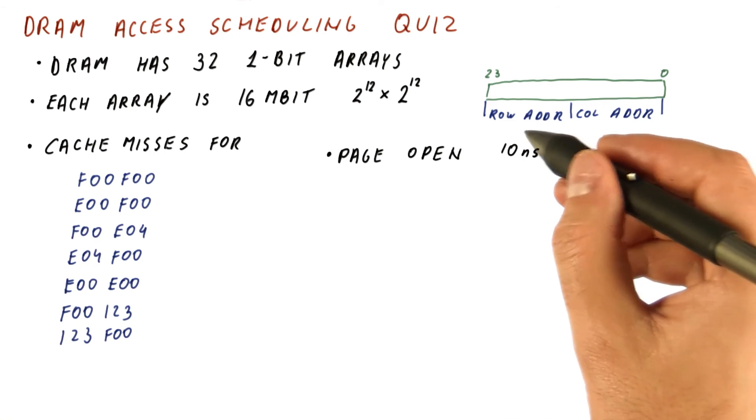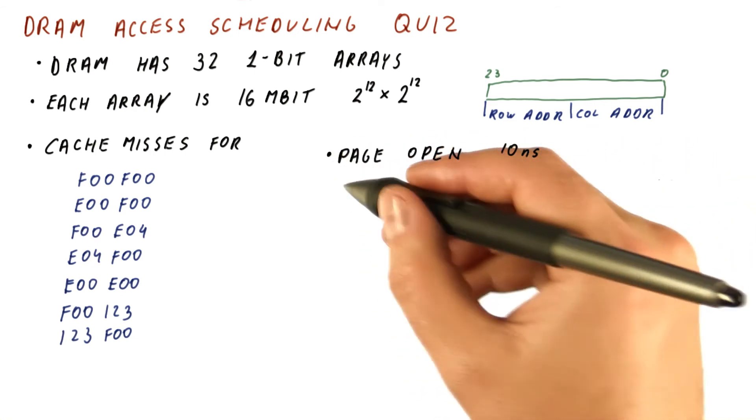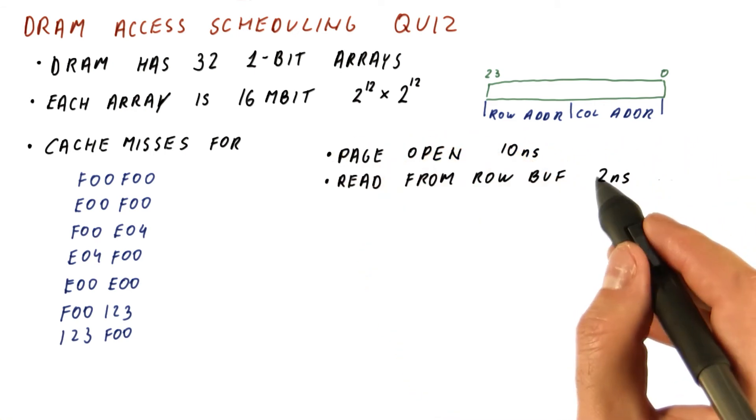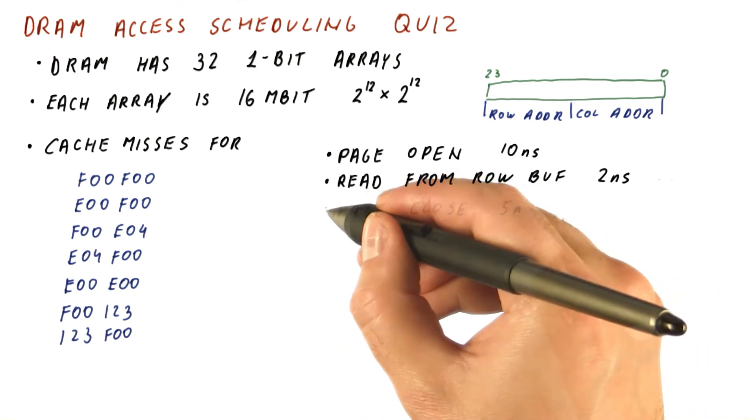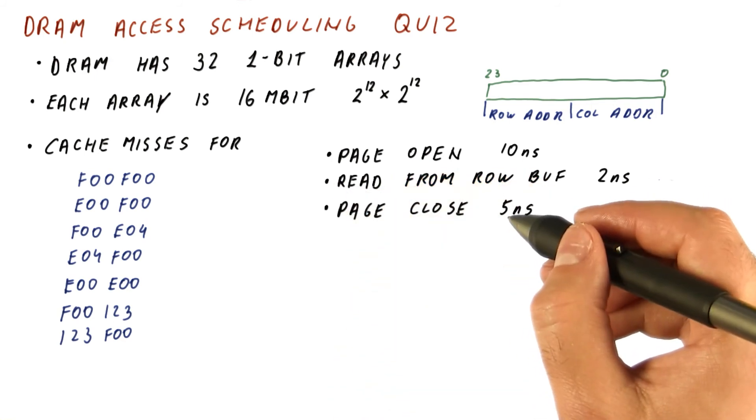Let's assume that it takes 10 nanoseconds to open a page, that it takes two nanoseconds to read something from the row buffer once the page is open, and five nanoseconds to close a page.